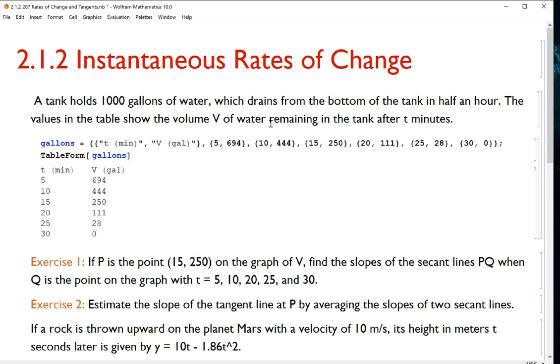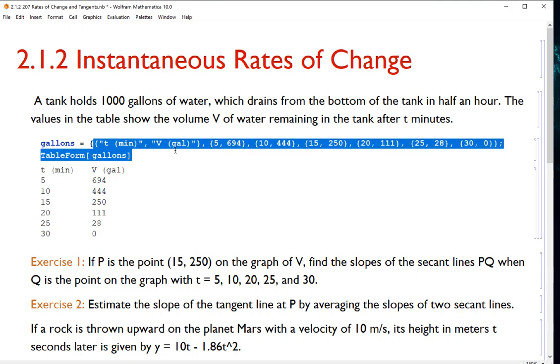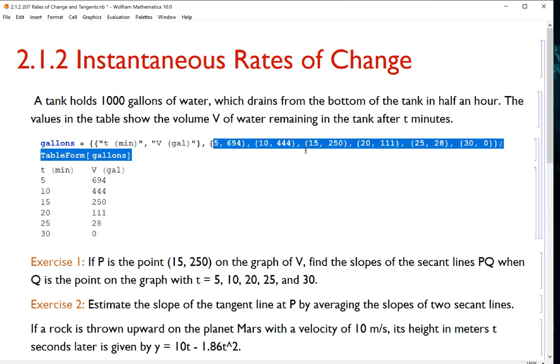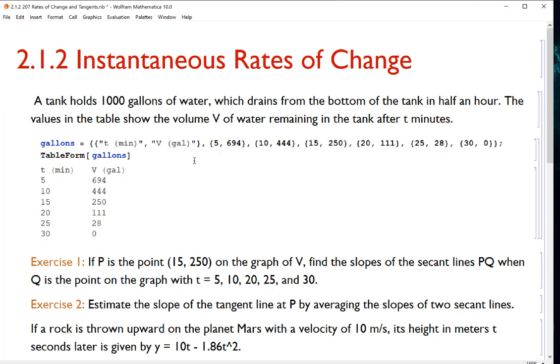For our first couple problems here, we have a tank holds a thousand gallons of water, which drains from the bottom of the tank in half an hour. The values in the table show the volume V of water remaining in the tank after T minutes. Now the table is actually these values here, and what I did is I made a list of gallons. Notice my first entry is a list that's T minutes and V gallons, and then from there I have a list of ordered pairs that once I spit out in table form of my list looks like this nice table.